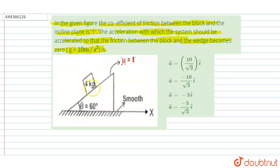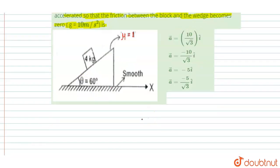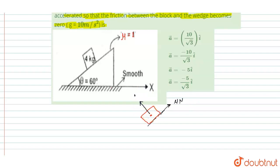Firstly, draw the FBD of this block. The block has mass 4 kg and is accelerating in this direction, so the frictional force acts in the opposite direction. The value of frictional force is mu times N. The normal force acts perpendicular to the surface and is equal to N. Mg acts downward, and the angle is theta, so the component of Mg along the surface is Mg cos theta.